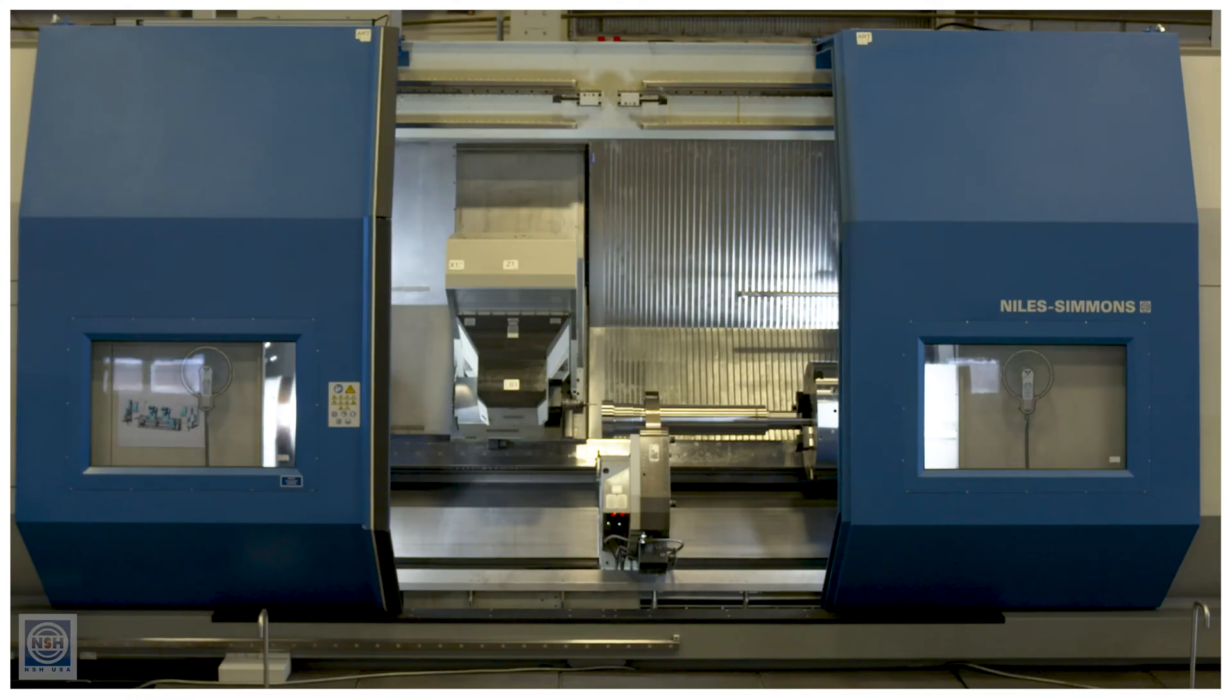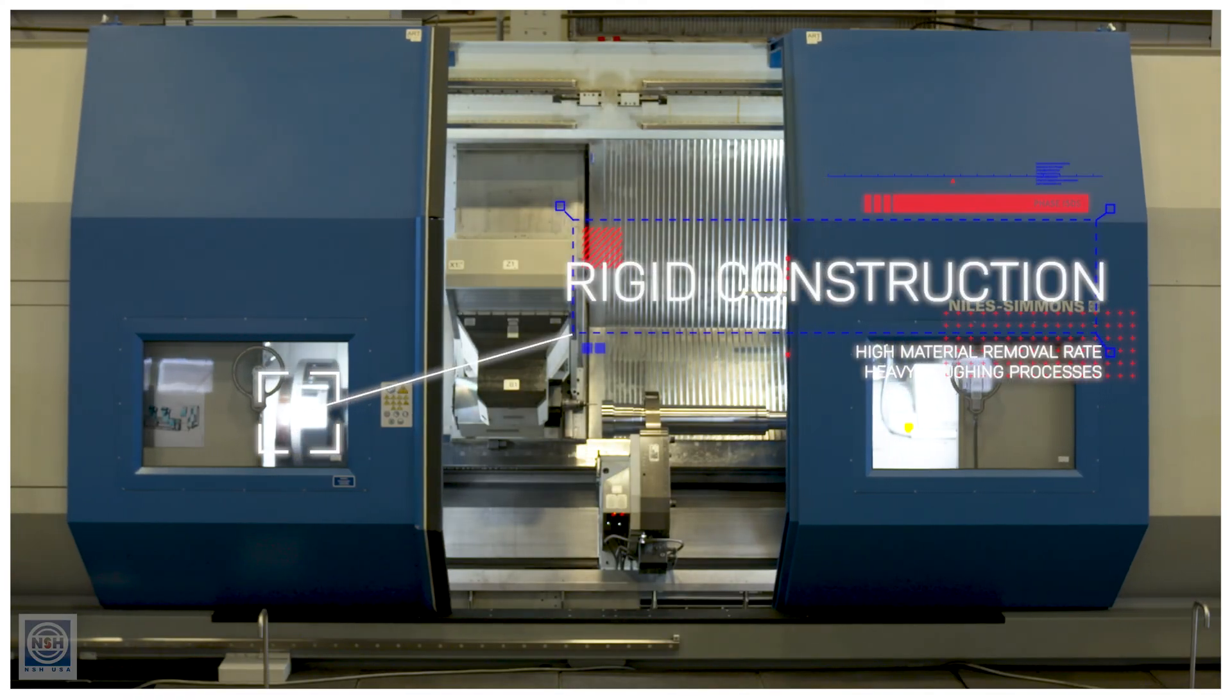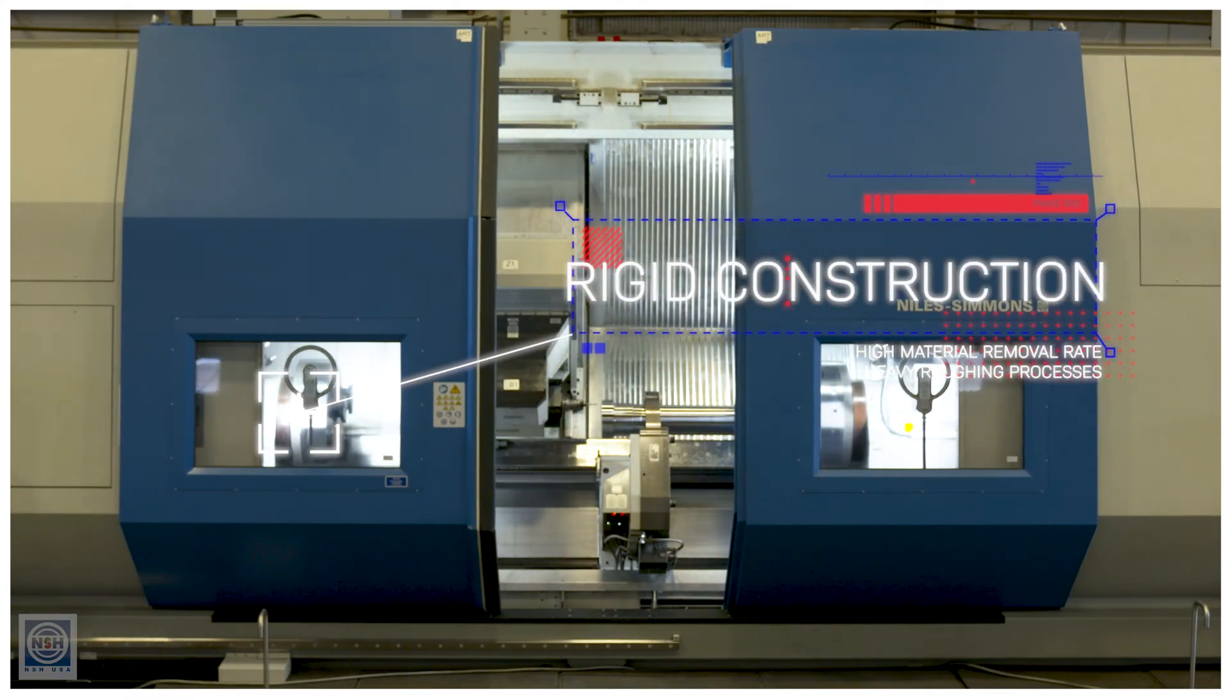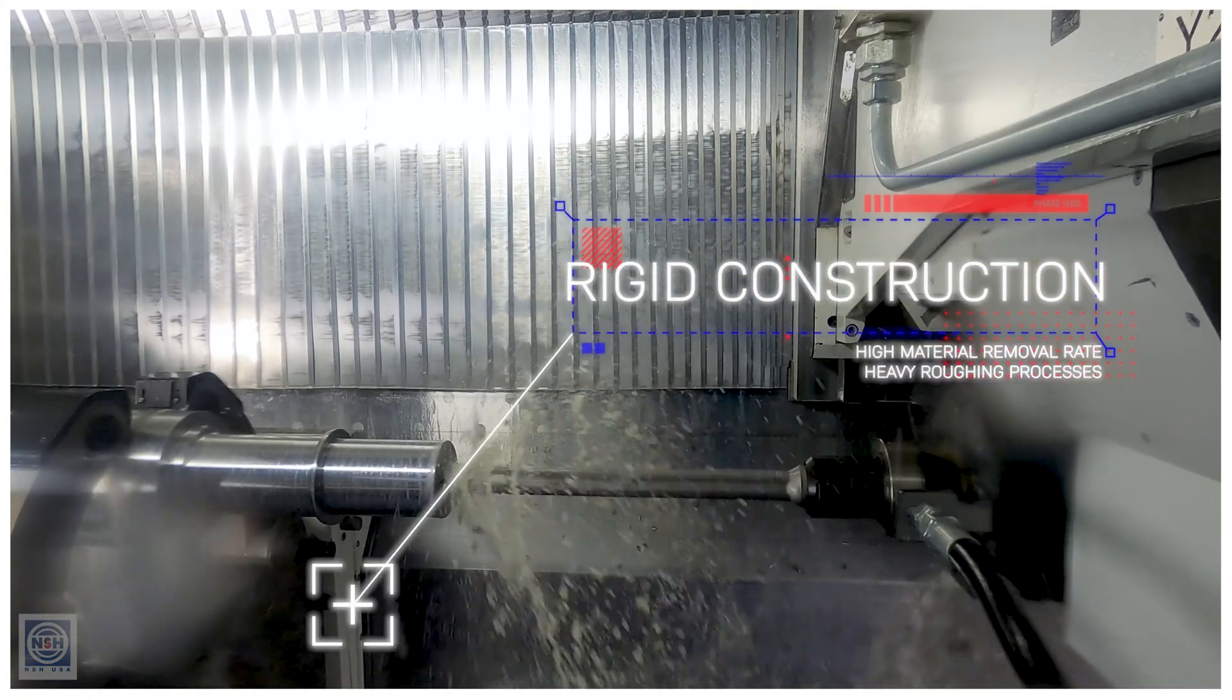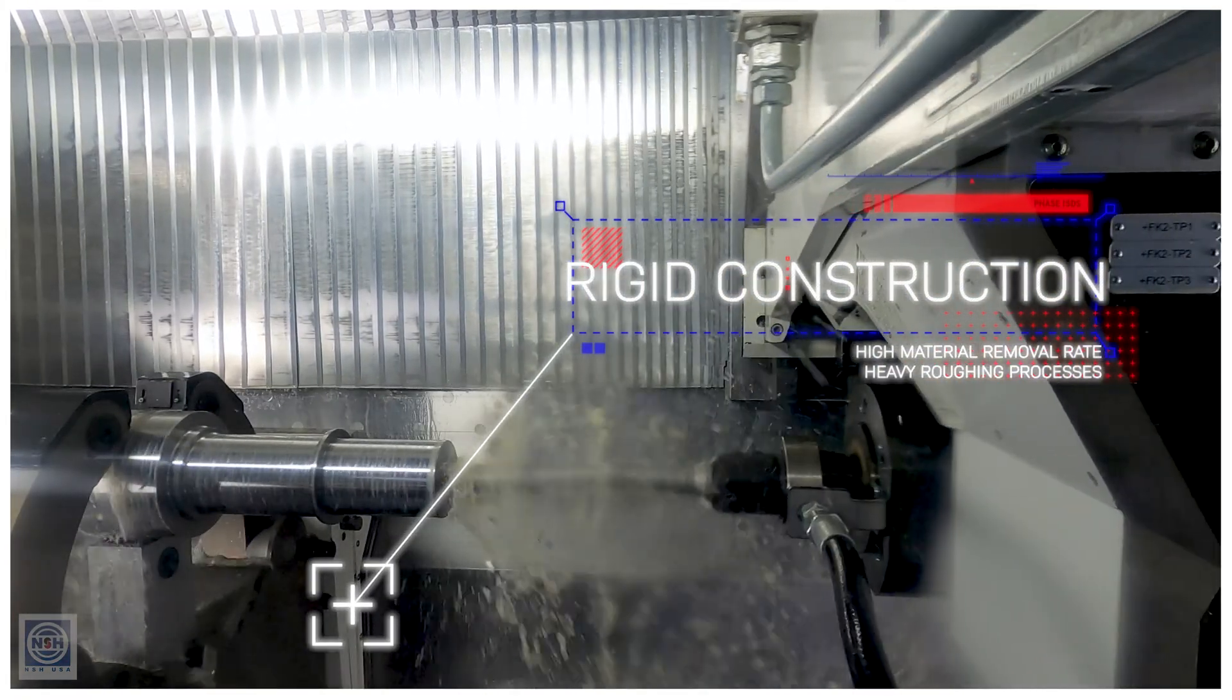The rigid construction of the Niles Simmons line of machine tools allows for heavy roughing, heavy material removal, and high material removal rates. We pair the speed of linear rails with the rigidity of a box way down the center of the machine.